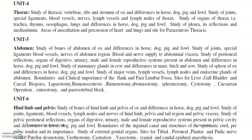In unit 4, you will be studying about the thorax region and all aspects of the thoracic region including many clinical aspects. Unit 5 is the abdomen. You will be studying abdomen properties, ruminotomy, abomasotomy, caesarean section, gallbladders, major veins and others. All ologies related to abdomen you will be studying.